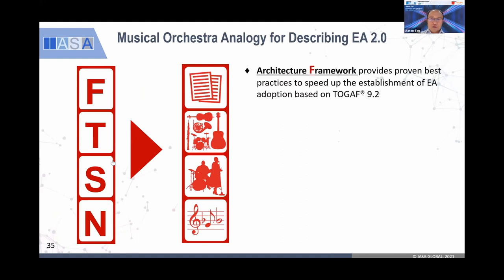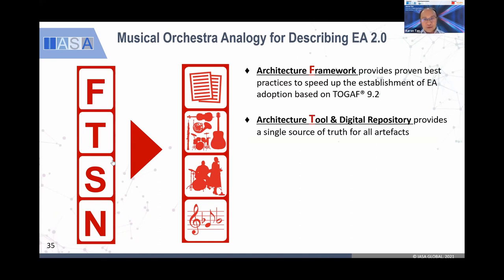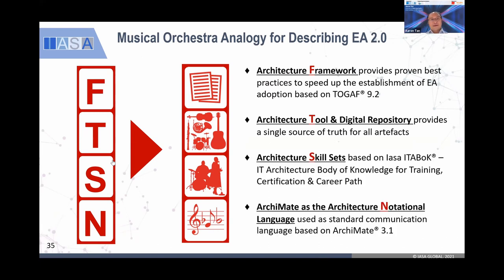The concept is: you need the proper framework — I highlighted the importance of adopting the right framework like TOGAF 9.2. Then you need the right platform for architecture tools and a digital repository as a single source of truth. You also need the right skill set for architects to perform the role. And of course you need to be able to read the notation — like ArchiMate. ArchiMate is actually the unified notational language for enterprise architecture — ArchiMate 3.1.